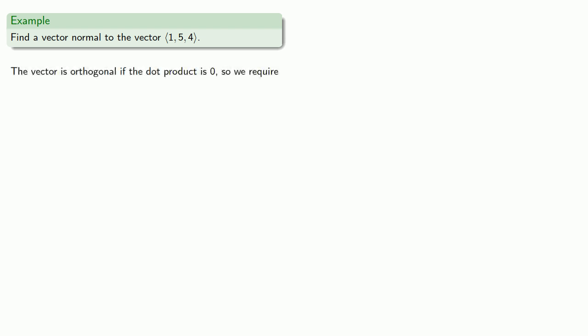The vector is orthogonal if the dot product is zero, so we require the dot product of whatever our vector is - let's be creative and call it (x, y, z) - and the given vector is equal to zero. We know that dot product, and since we have one equation with three unknowns, we can choose values for two of the unknowns and find the remainder.